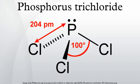An industrially relevant reaction of PCl3 with amines is phosphonomethylation, which employs formaldehyde: R2NH + PCl3 + CH2O → (HO)2P(O)CH2NR2 + 3HCl. Aminophosphonates are widely used as sequestering and antiscale agents in water treatment.